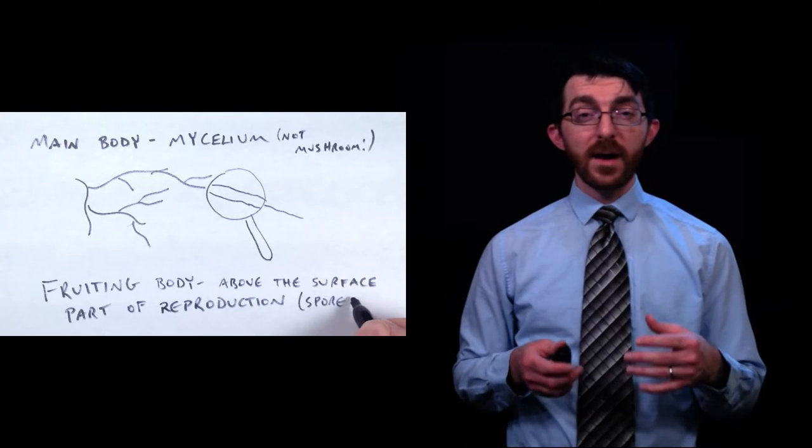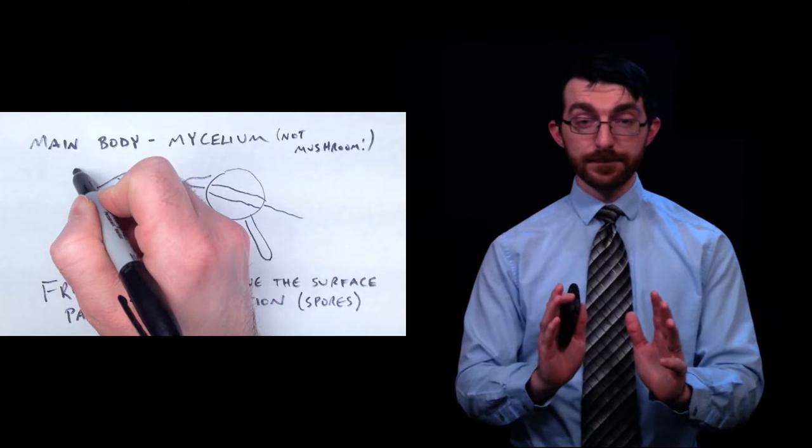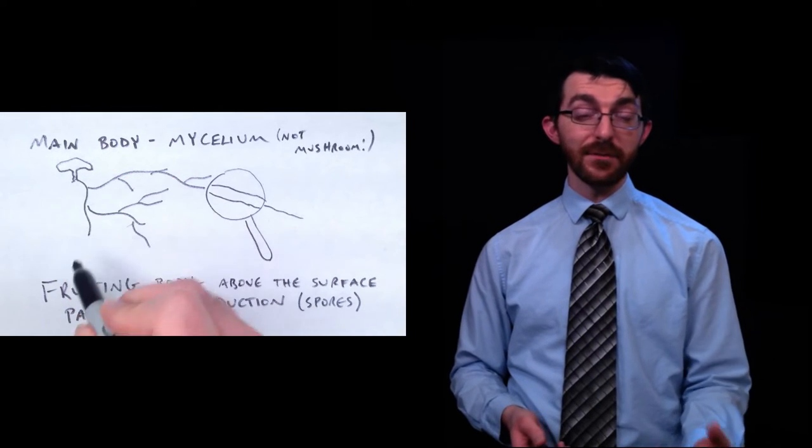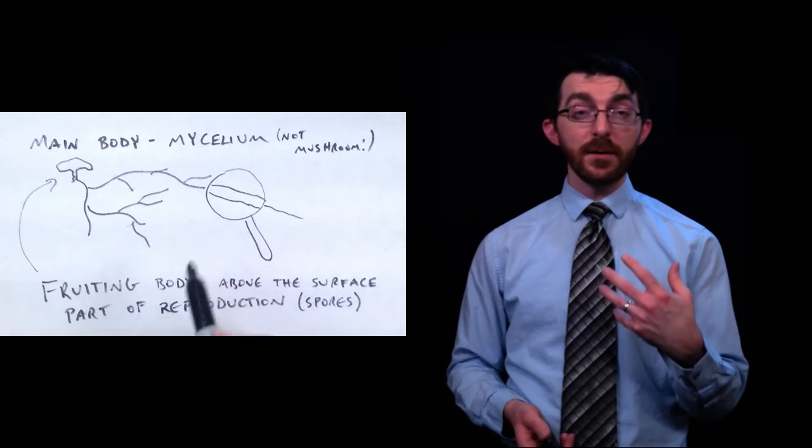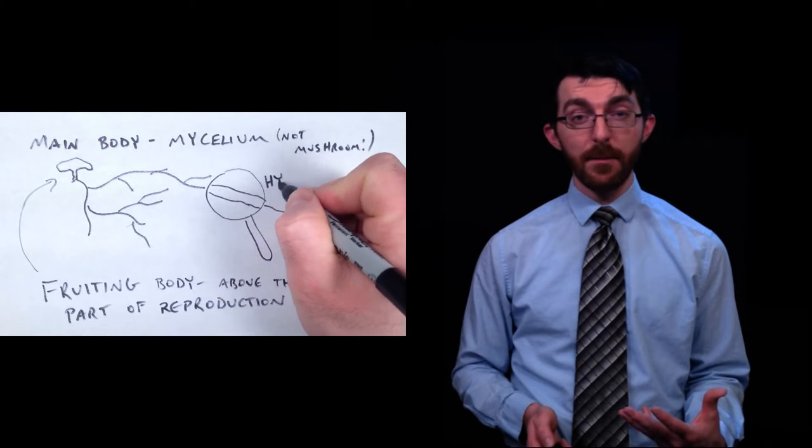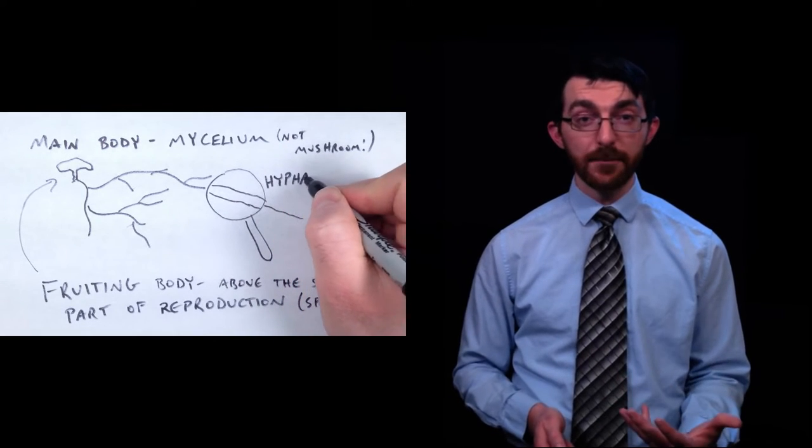We've got a fungus. The main body is called the mycelium, and the mycelium is made of different kinds of cells in the fruiting body. The cells that make up the mycelium are called hypha. They are best described as a filament, which is basically a long string. There's a couple different kinds of hypha.